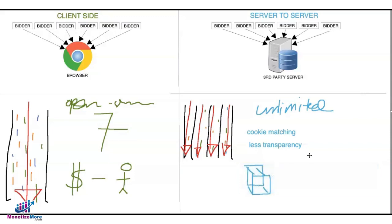But Prebid from AppNexus released a new technology that allows for open-source server-to-server header bidding, which means publishers are also now able to look at the code made available to them.